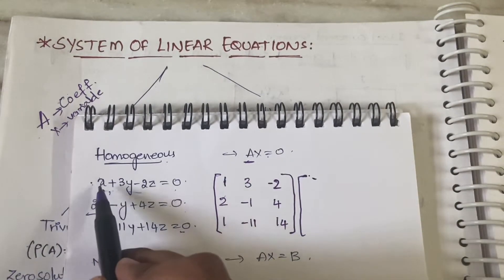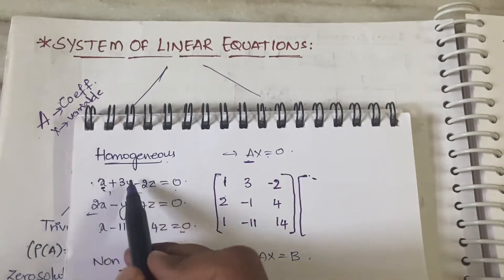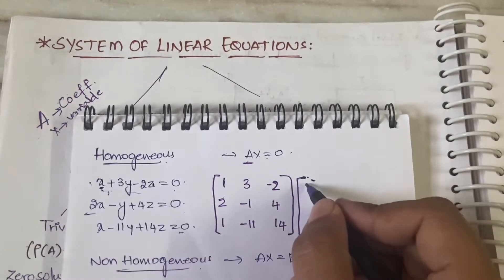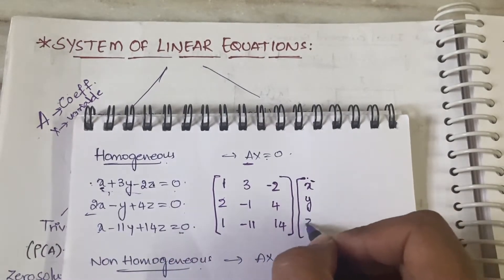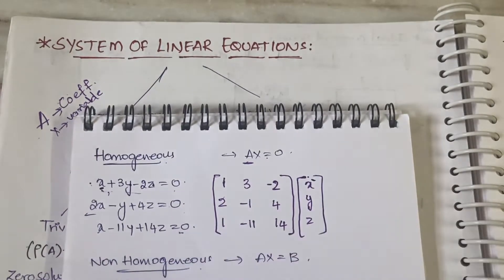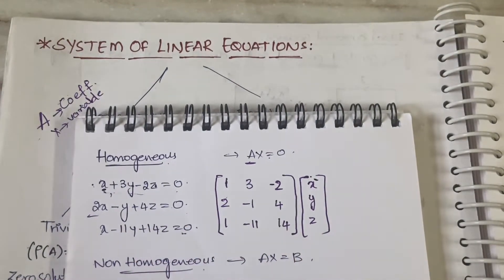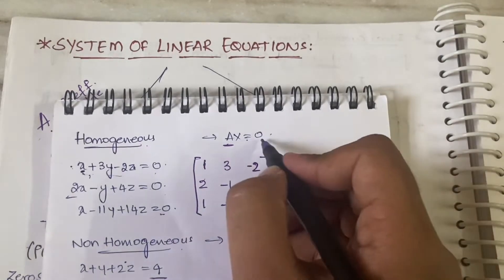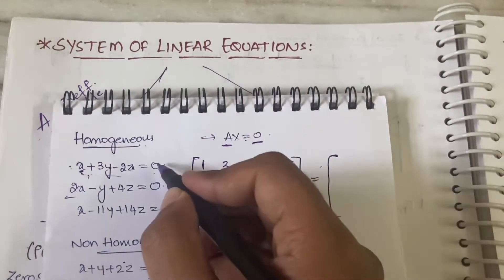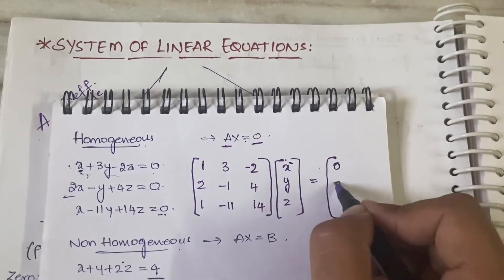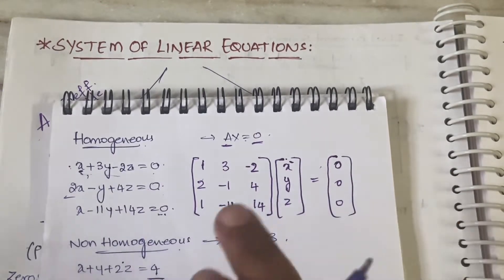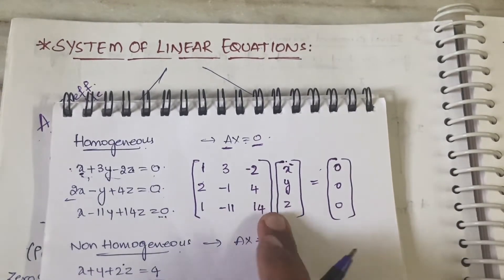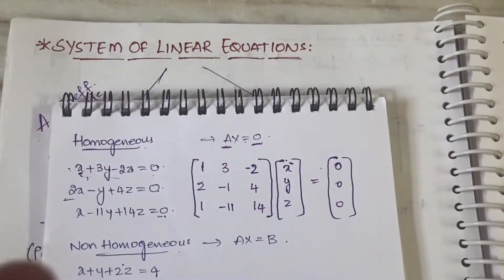Next, X is the variable matrix — it contains the variables, which could be x, y, z, or a, b, c, or x1, x2, x3, or p, q, r depending on the problem. Then zero is simply a zero matrix: zero, zero, zero. This is the setup for the homogeneous case where AX equals zero.